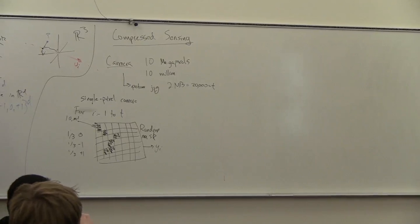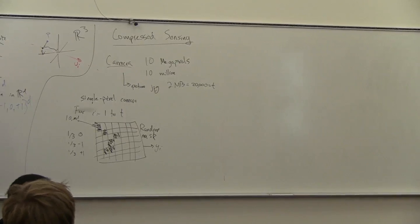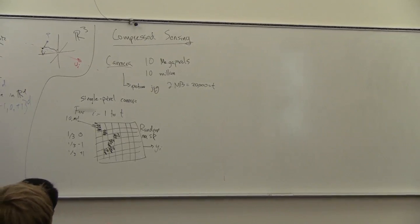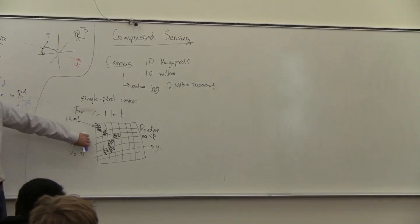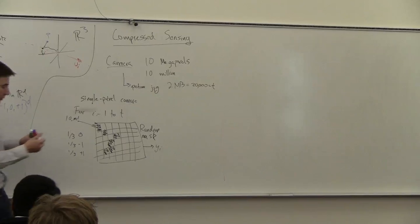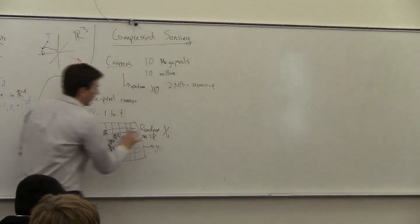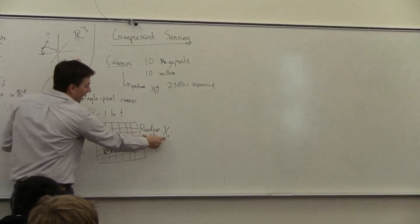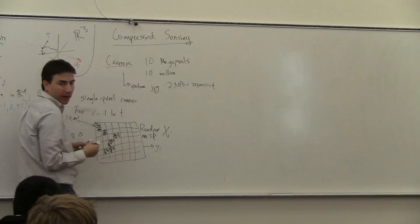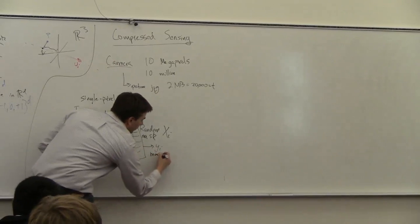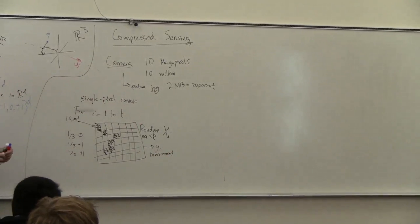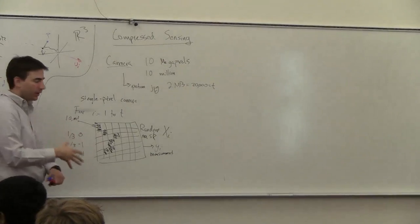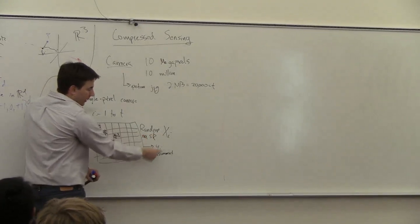The single pixel camera goes through each pixel and determines the score, whether it's zero, negative one, or plus one, and then it compresses and normalizes the JPEG down to the small format. So this is all the pixels, but I'm taking one reading, one measurement. One measurement is described by this random mask Xi, and I'm going to do this T times. I take a whole image, do a random mask to it, and output one measurement.